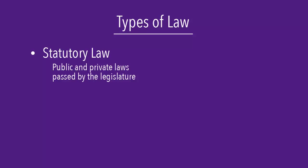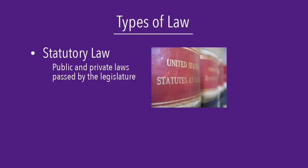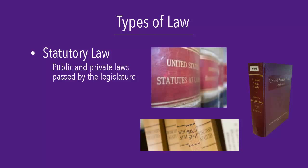The publications associated with statutory law include the Statutes at Large, which contain all the laws enacted within a given congressional term. Every six years when the law is codified, the U.S. Code is published. An example of statutory law at the state level is the Wisconsin Statutes, which are updated every two years. You can find these texts online or in print at Anderson Library.